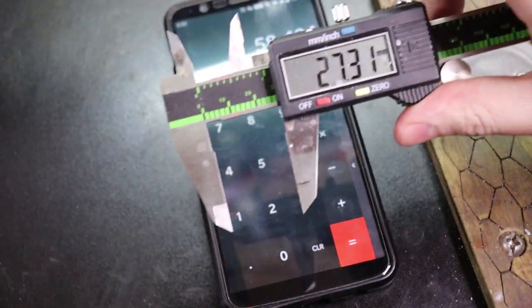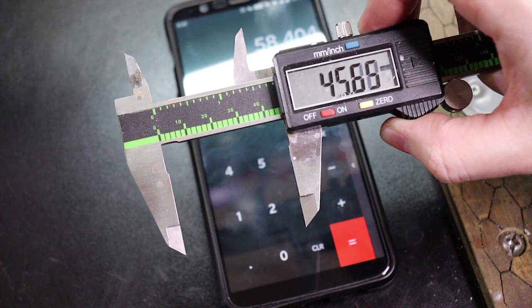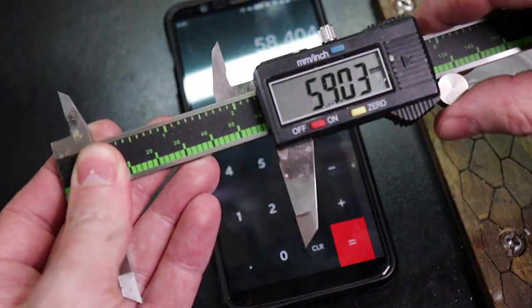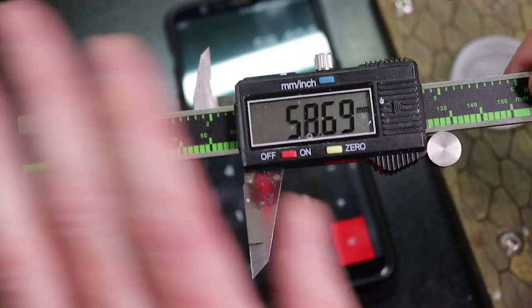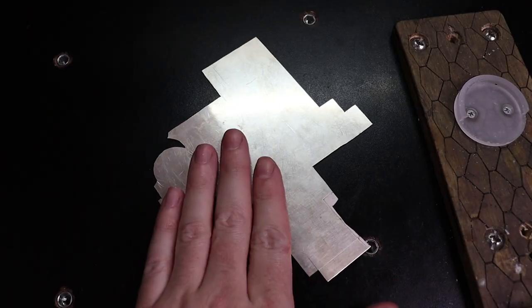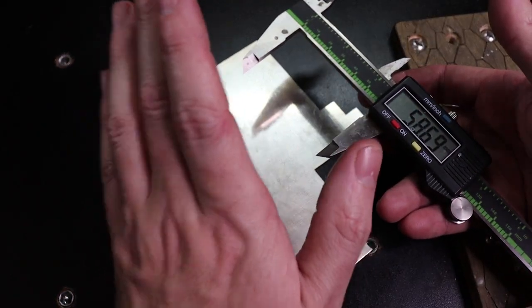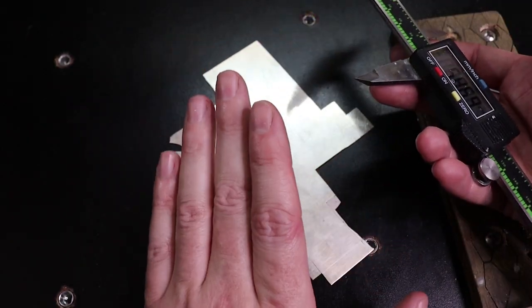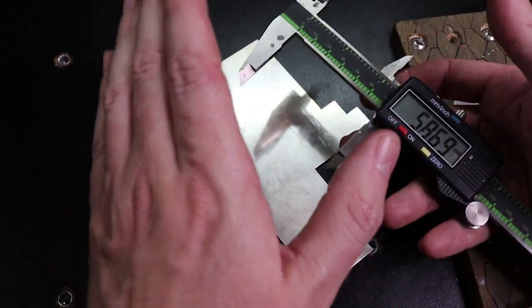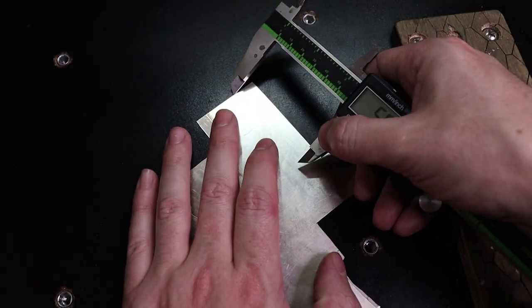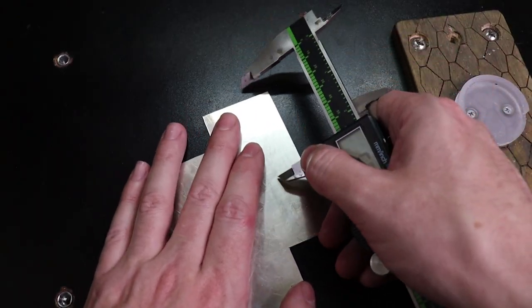Just take your calipers and set them to whatever that happens to come out to. If you're a little over, it's totally fine. Now mark your metal. I'm just going to use my calipers to do that. If you're using expensive calipers or really hard metals, don't use your calipers to mark stuff. These are very cheap calipers and they've been fine so far.